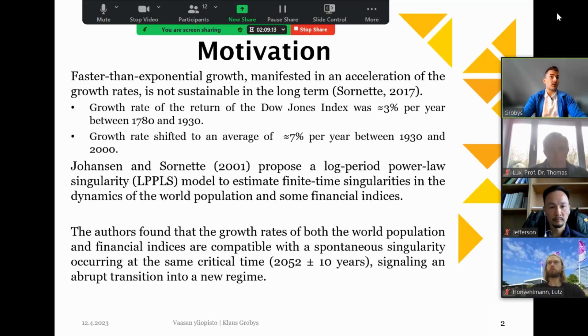And Johansen and Sornette, in a 2001 paper, they proposed a log-periodic power law singularity model, LPPLS model, to estimate finite time singularities in the dynamics of world population and some financial indices. Among others, they used the Dow Jones 30 index. The authors found that the growth rates of both the world population and the financial indices are compatible with a spontaneous singularity condition occurring around 2052, plus minus two years. And this would signal an abrupt transition into a new regime.